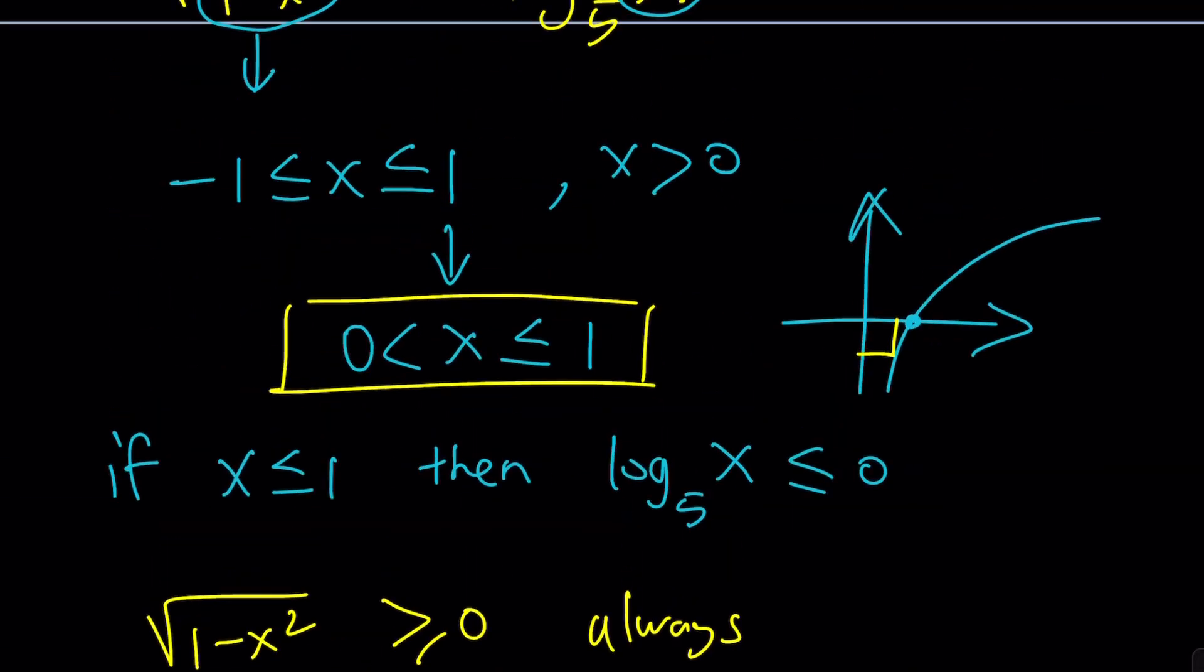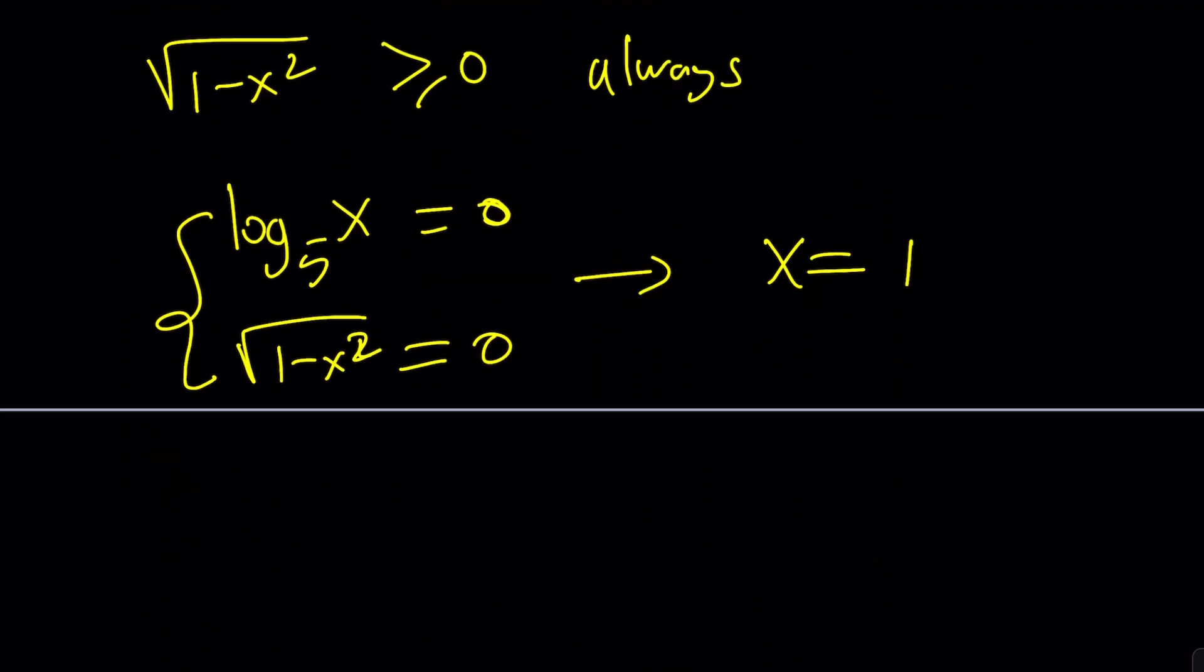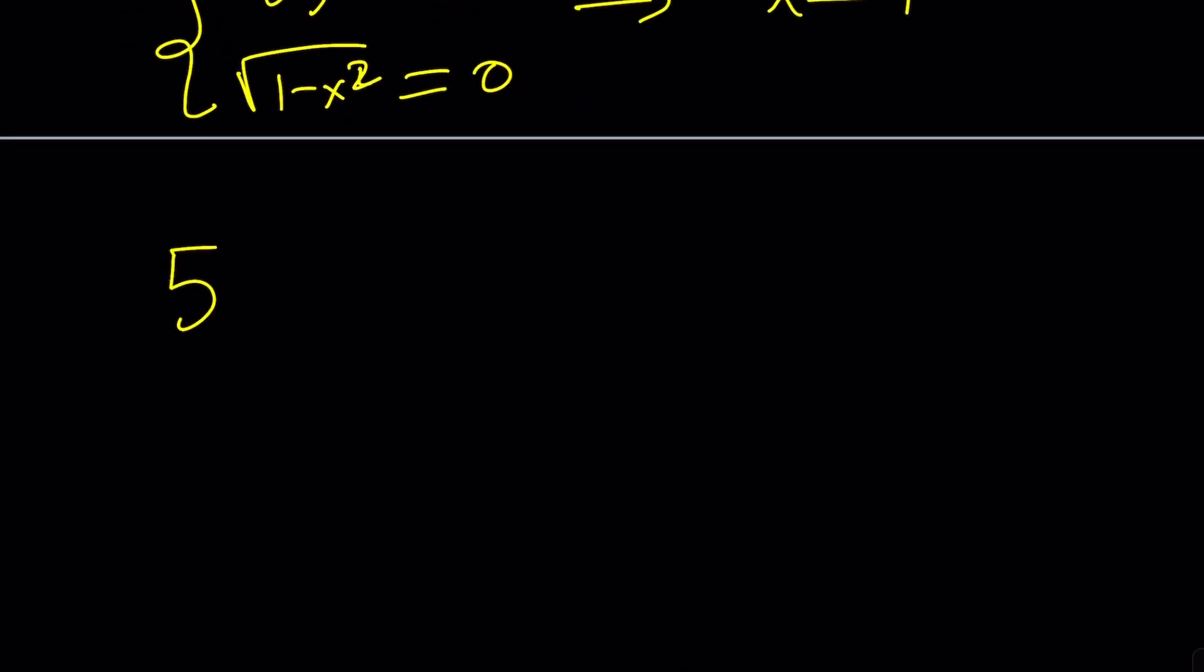So our exponential equation, which is the original, is this. So the exponentiaized form. 5 to the power square root of 1 minus x squared equals x, right? So right-hand side is pretty simple. What about the left?